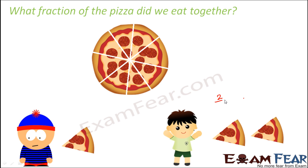So basically Rohan had 2/8 of the pizza and Amit had 1 slice of that pizza. That is Amit had 1/8 of the pizza. Now both of them are very much interested to know what fraction of the pizza did they eat together. So together how much did they eat.